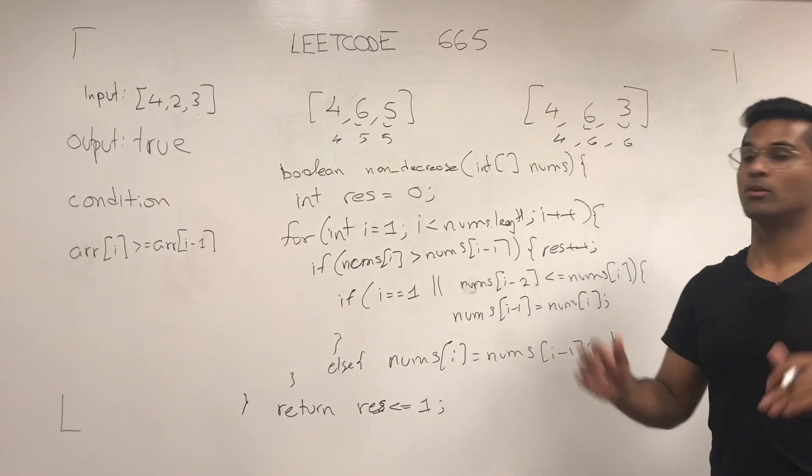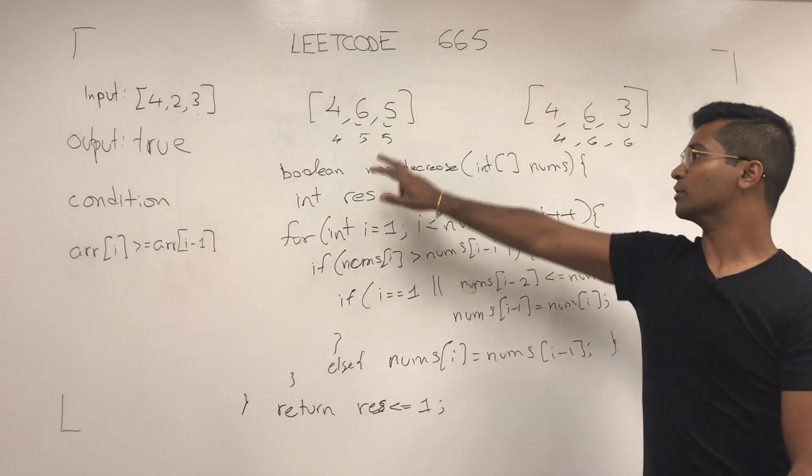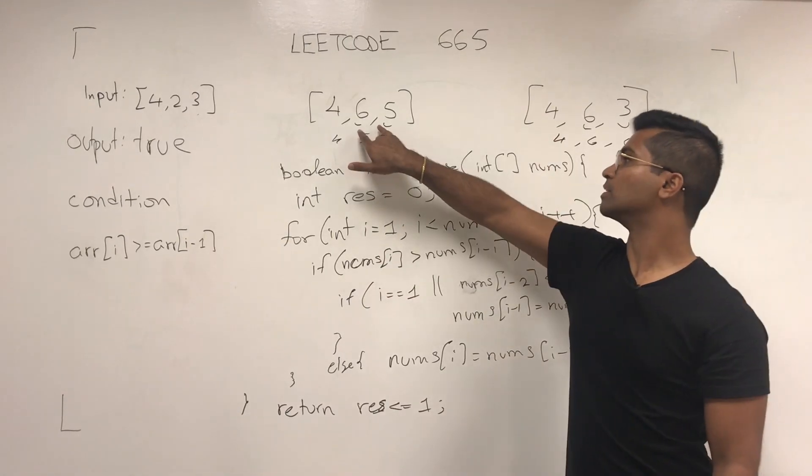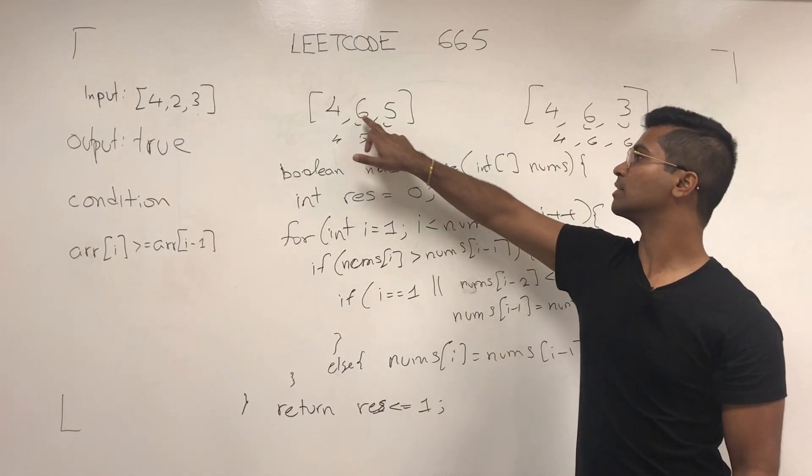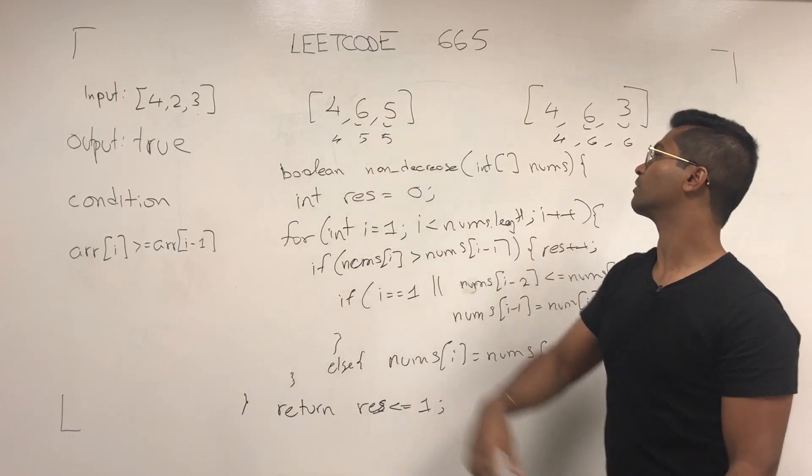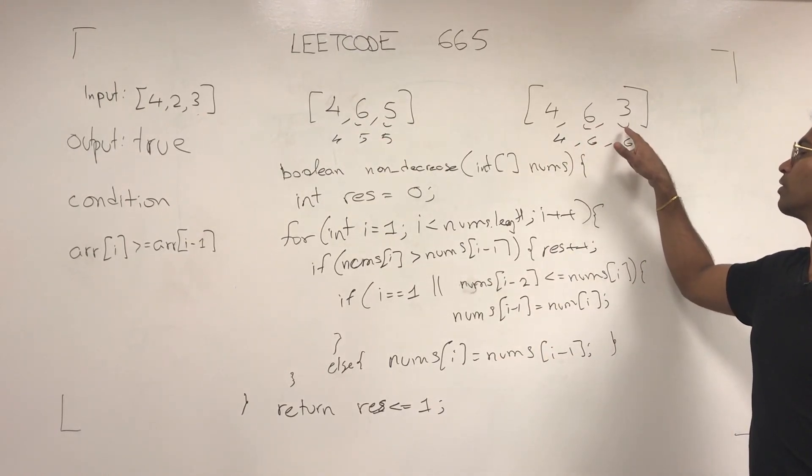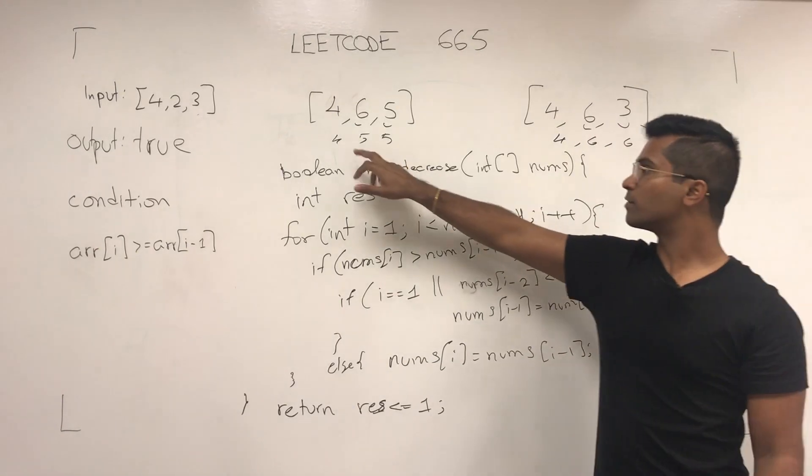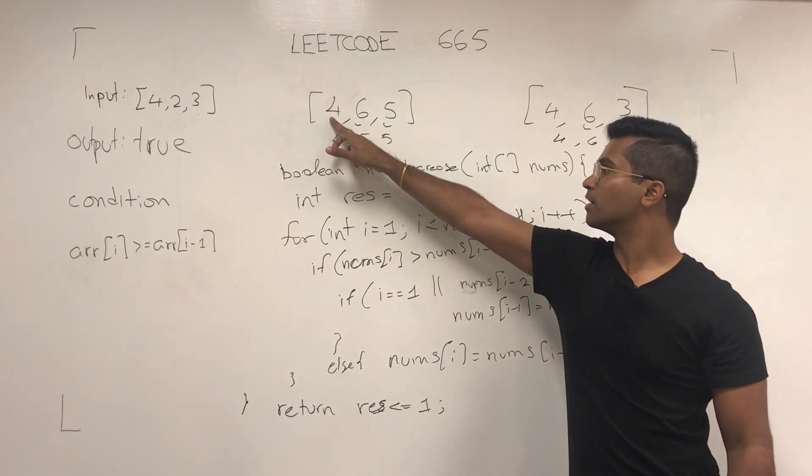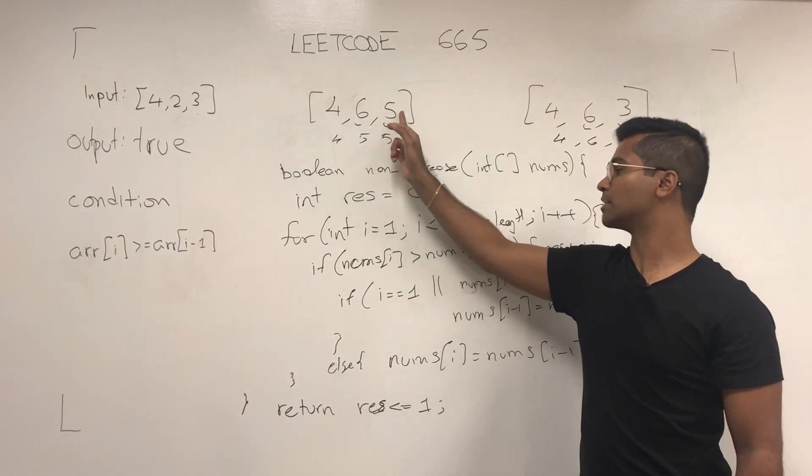And that's pretty much how you solve this problem. So let's look back at what we did. There's two cases. Pretty much we see, hey, am I going to make this 6, am I going to change this 6 or am I going to change this 5? Am I going to change this 6 or am I going to change this 3?